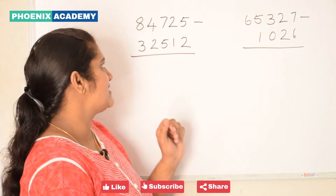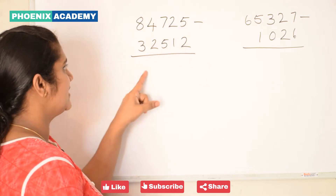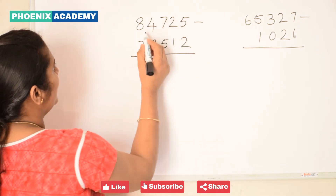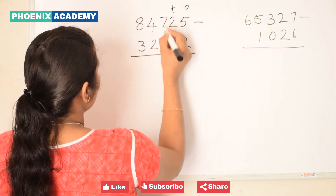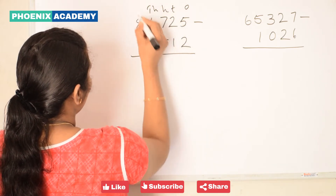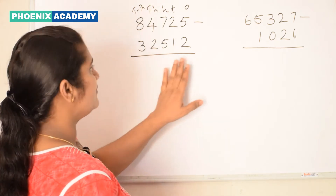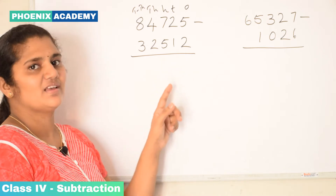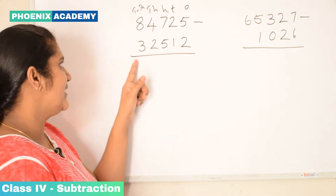Let's do these examples. 84,725 minus 32,512. 84,725 is 5 ones, 2 tens, 7 hundreds, 4 thousands, and 8 ten-thousands. 32,512 is 2 ones, 1 ten, 5 hundreds, 2 thousands, and 3 ten-thousands.